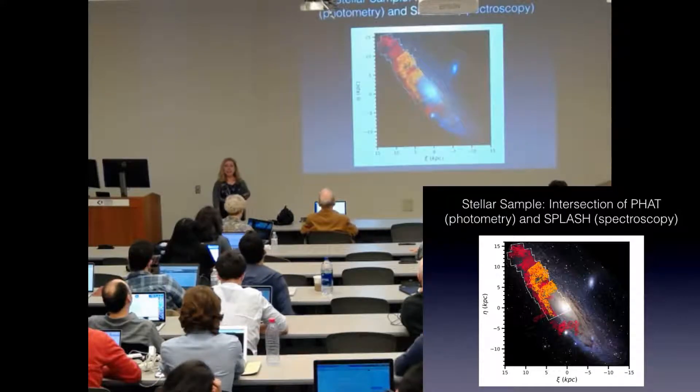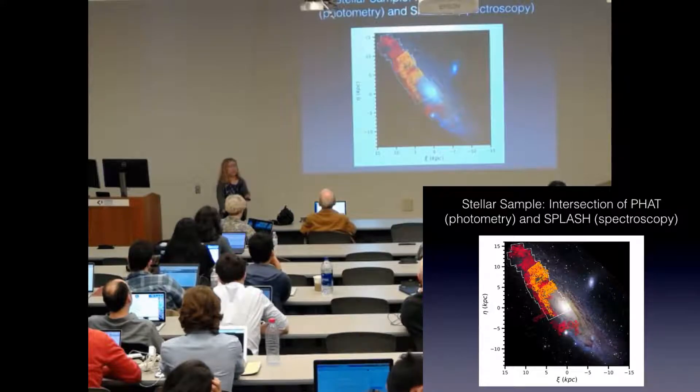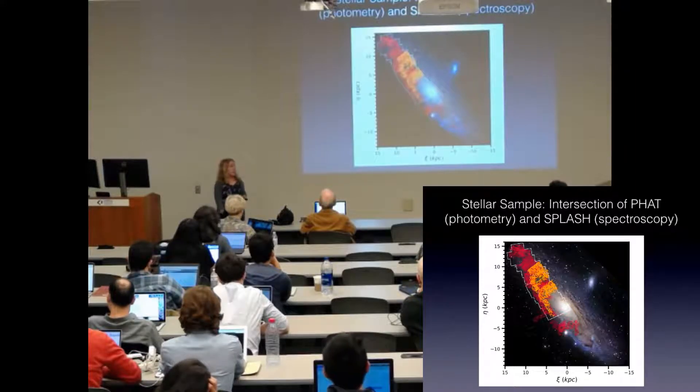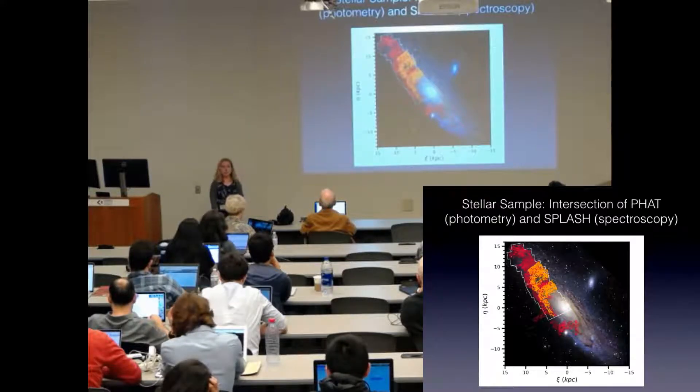My stellar populations come from the intersection of the FAT and SPLASH survey. The FAT survey is outlined in white and is photometry from Hubble, and the SPLASH survey are the pink points here and that's spectroscopy from DEIMOS.